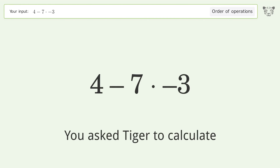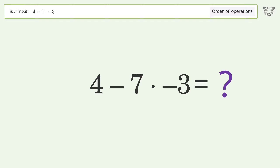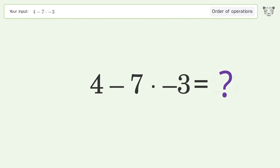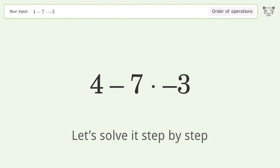You asked to calculate this. It deals with the order of operations. The final result is 25. Let's solve it step by step.